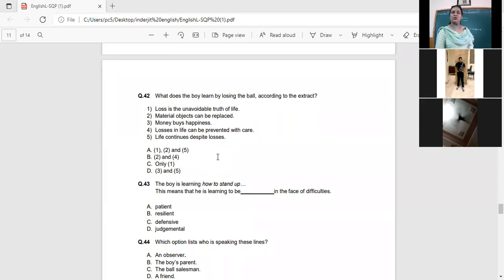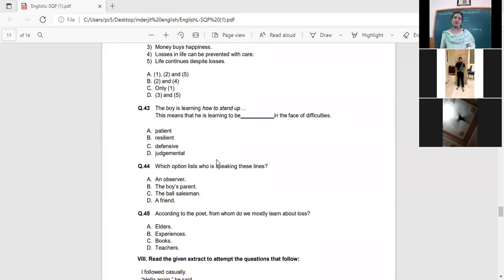Now which option is with speaking? These lines who are speaking? An observer, the boy's parent, the boy's salesman, a friend, because the boy does not mention there and he's saying, yes, I would not intrude. So he's another person. So he's not there. So it is an observer. According to the poet, from whom we mostly learn about loss? Whom do we learn about loss? Experiences, right? And of course, life gives us so many experiences.